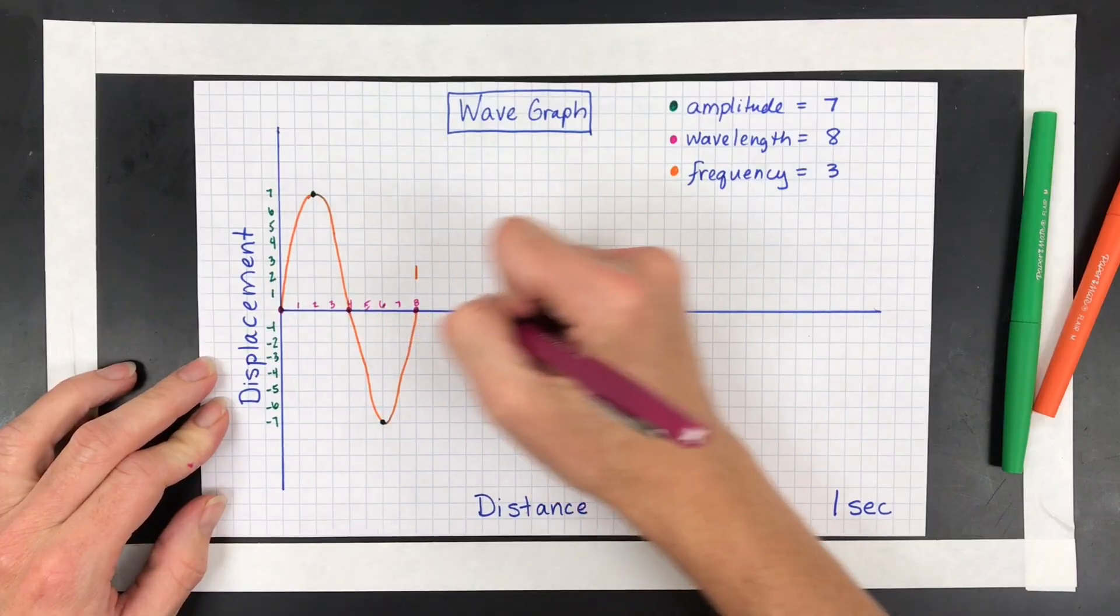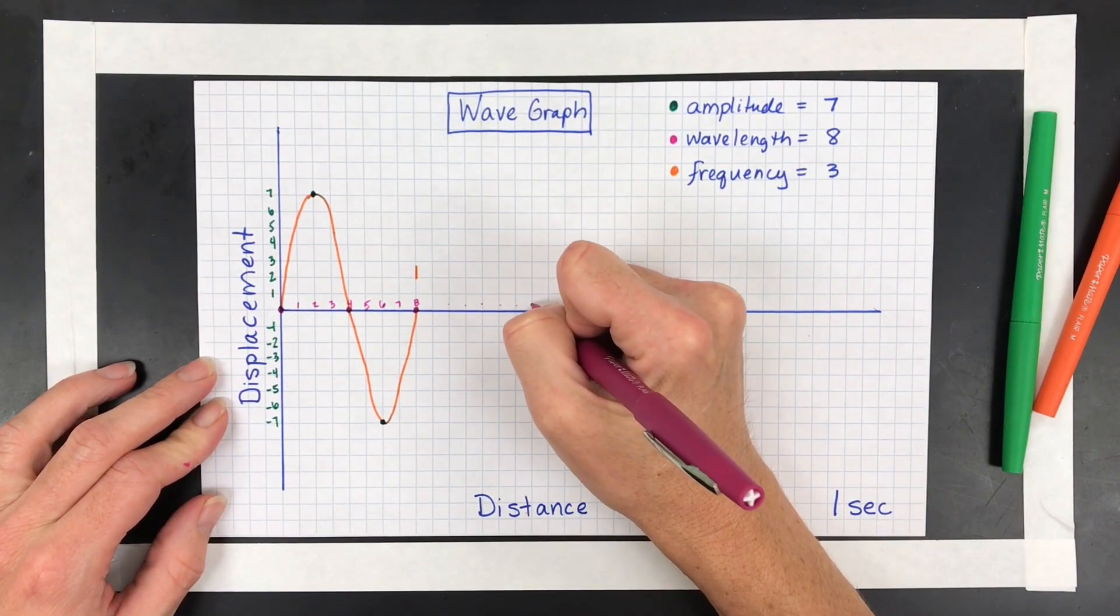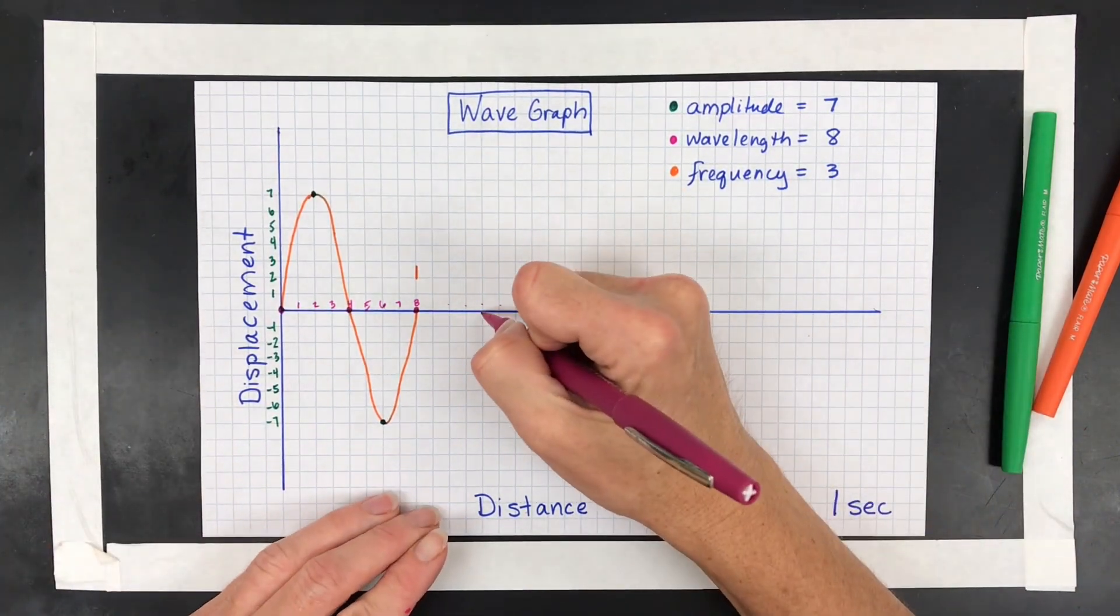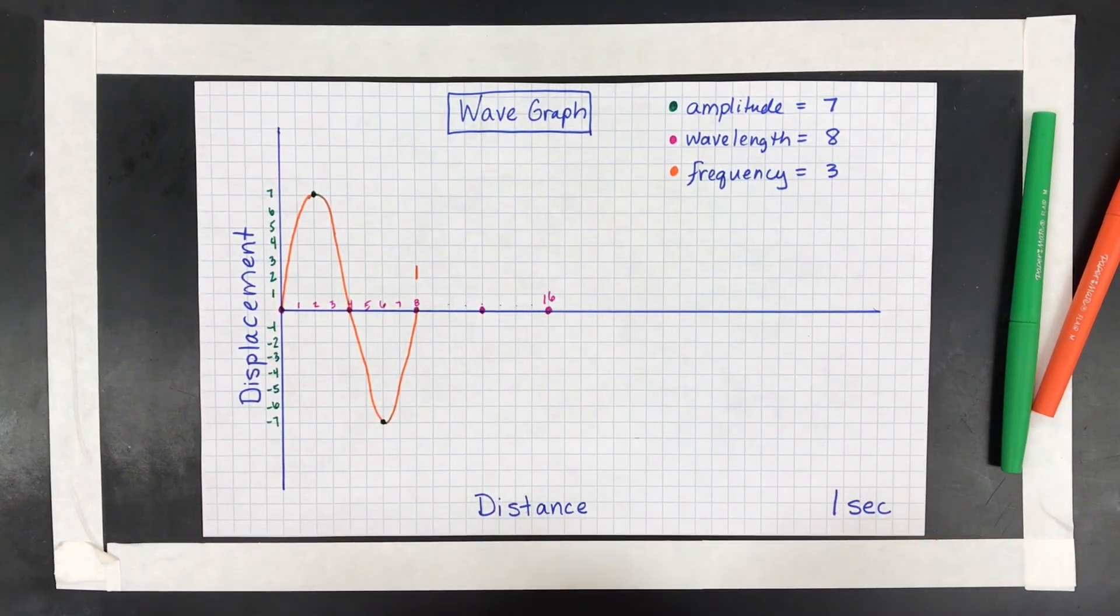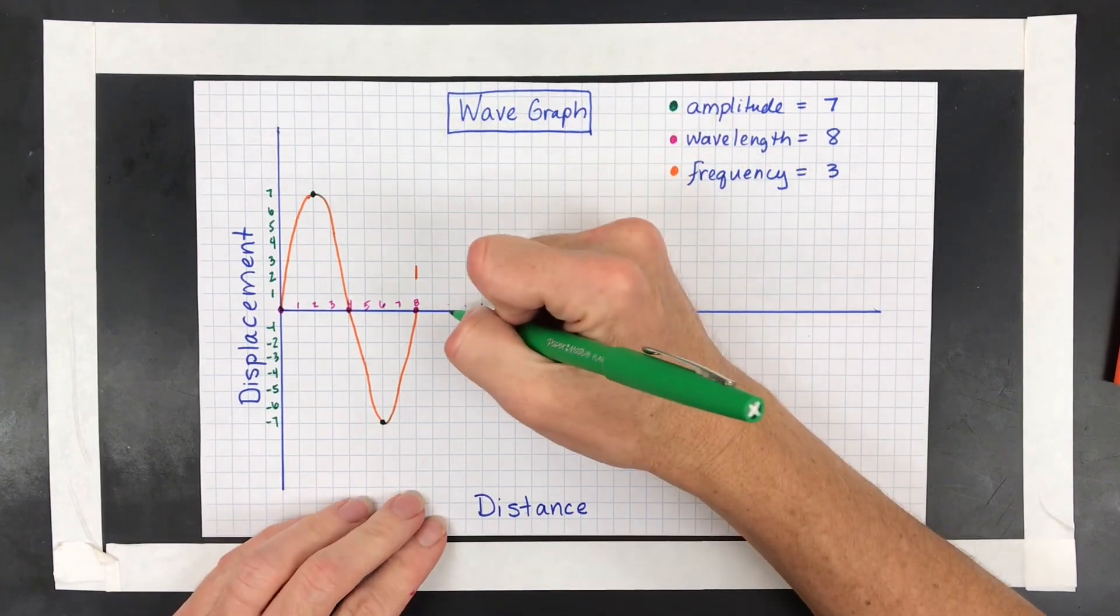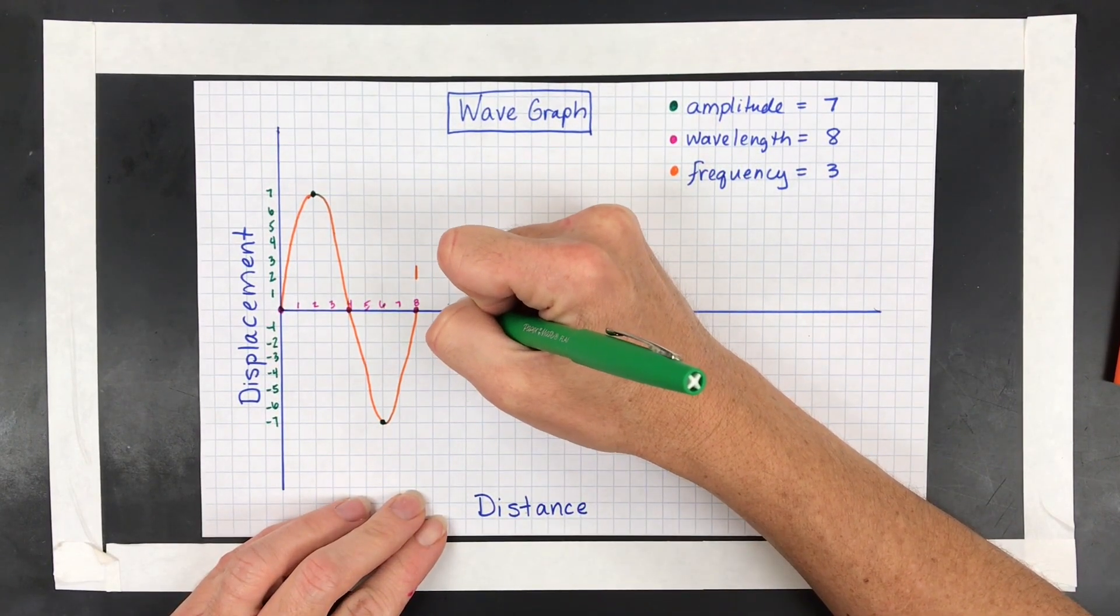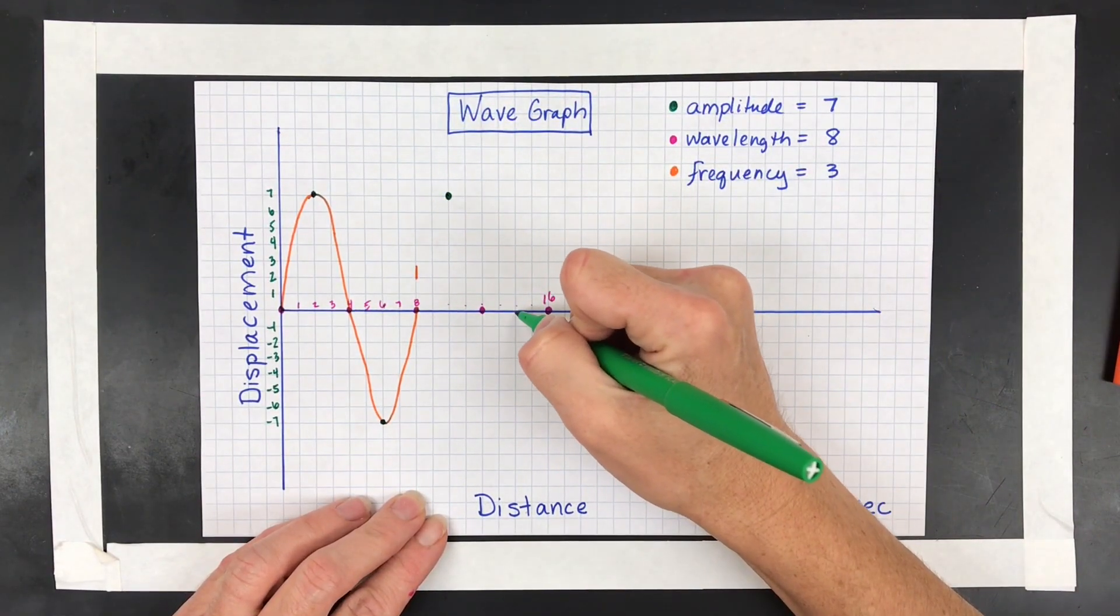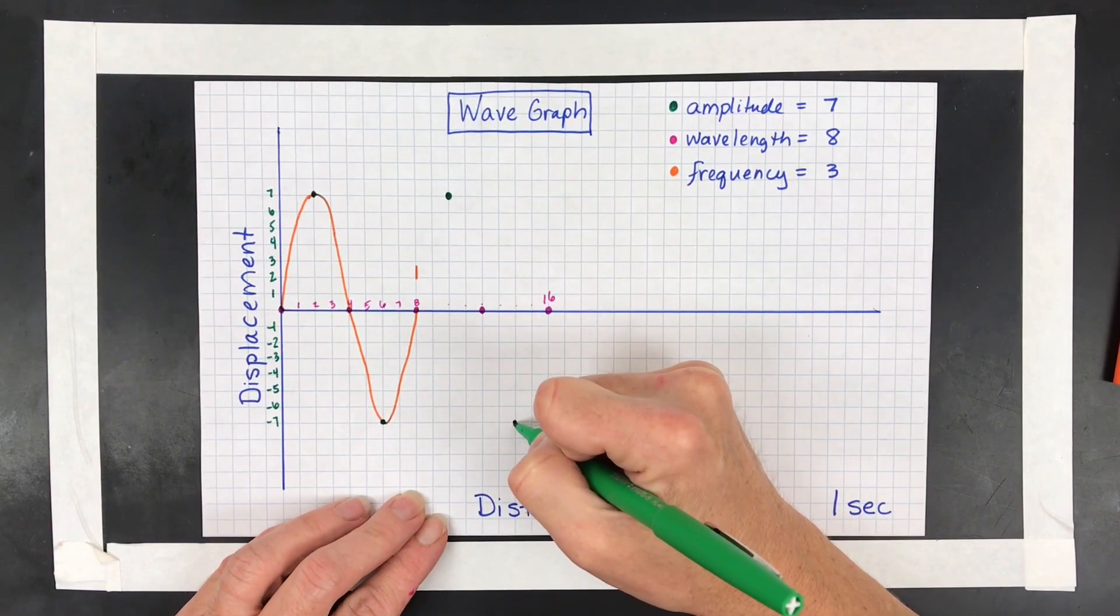So I'm going to go out 8 more. So 9, 10, 11, 12, 13, 14, 15, 16 is here. That's going to be our next wave. Halfway will be right there. And then I'm going to switch colors. Amplitude is, again, the height of the crest and the trough. So halfway between here is going to be 9 and 10 and then up to 7. Same thing, halfway between here is going to be your 14 and then down to 7.